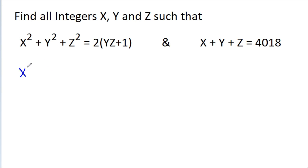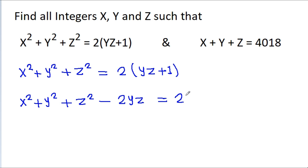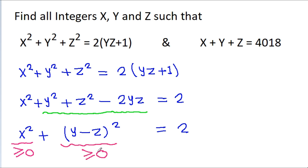We have x² + y² + z² = 2yz + 1, which rearranges to x² + y² + z² - 2yz = 2. Since y² + z² - 2yz = (y - z)², we get x² + (y - z)² = 2. Since x and z are integers, both x² and (y - z)² are greater than or equal to 0.